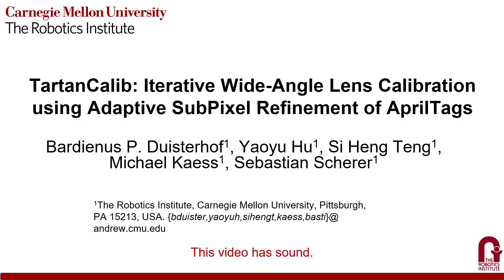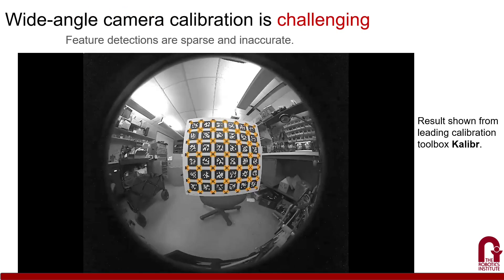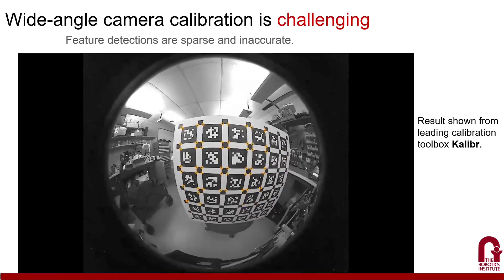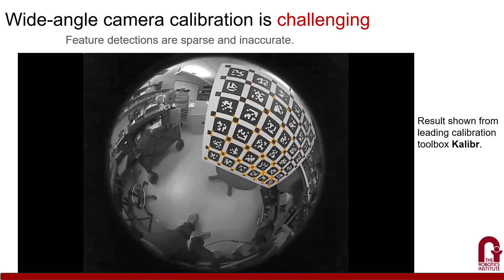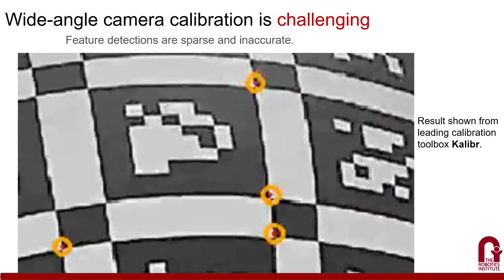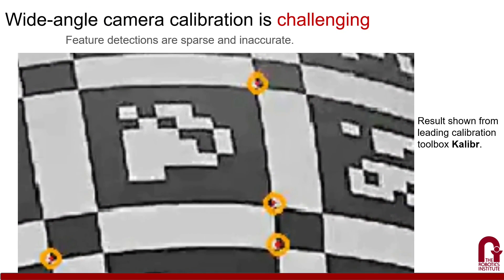We present Tartan Calib, an open-source and easy-to-use toolbox for geometric camera calibration of wide-angle lenses. Geometric camera calibration is a critical prerequisite for many machine vision tasks, such as depth perception. Wide-angle geometric camera calibration is challenging due to the extreme distortion that makes detecting features accurately and robustly difficult.